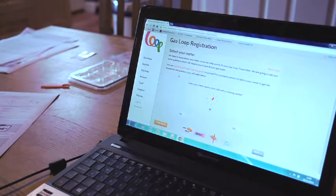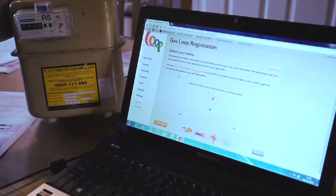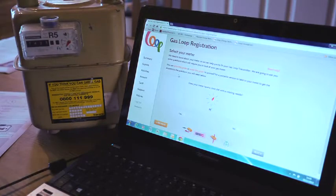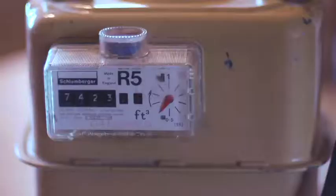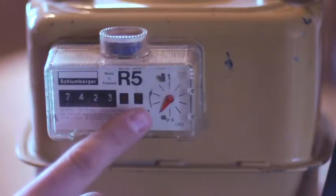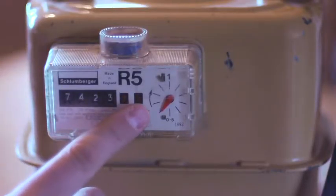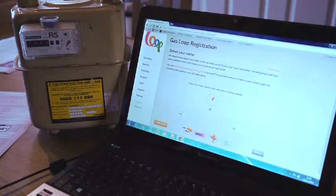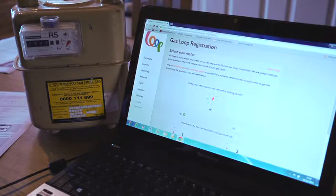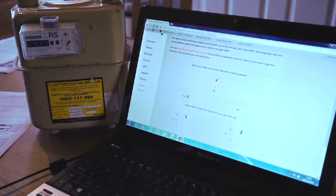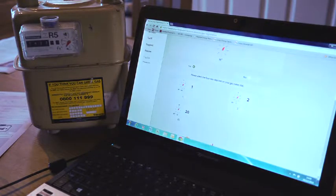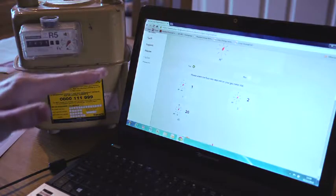So, looking at the Imperial meter first, which I have one here which I can show you, this meter clearly has a clock face with a rotating needle on it. Therefore, on the registration, we can click yes to the meter type having that clock face.